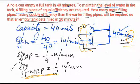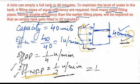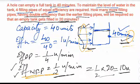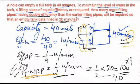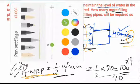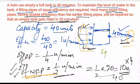The new pipes we add will be responsible for actually filling the tank. We need to find how many new pipes are required so the tank gets filled in 20 minutes. Each new pipe fills at 1/2 unit per minute, so in 20 minutes one new pipe fills 1/2 × 20 = 10 units. Since the tank capacity is 40 units, we require four new pipes.